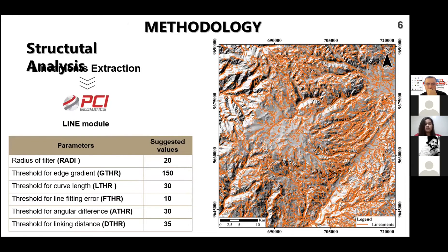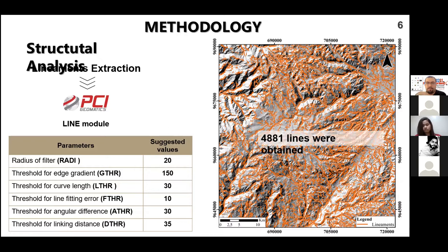For the structural analysis, we utilized the automatic extraction of lineaments from the TPI. This process was carried out using the software PCI-Geomatica. Using the parameters shown in the table, we obtained 4,881 lineaments. The maximum length of the linear structures is 6,947 meters, and most of the lineaments are shorter than 900 meters.